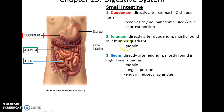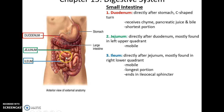After that is the jejunum, found primarily in the upper left quadrant. It is relatively mobile, so it's always in motion. And then after that is the ileum, which is the largest portion. It's directly after the jejunum, and it is mostly in the lower right quadrant. It's very mobile, and it ends in the ileocecal sphincter that leads to the large intestine.